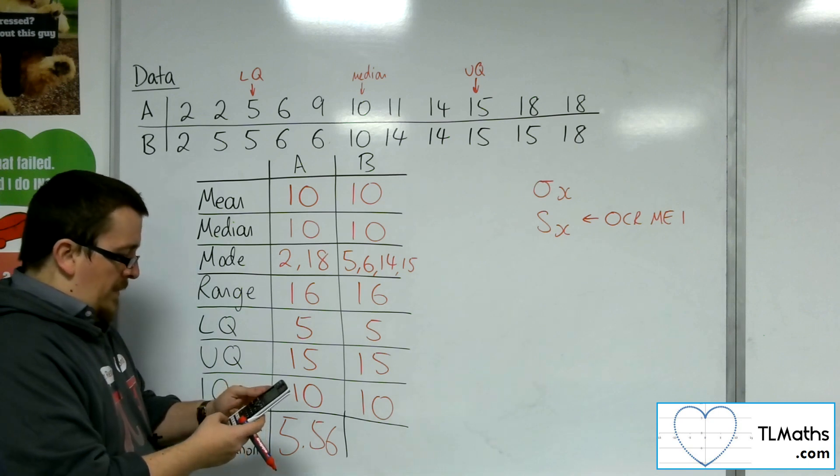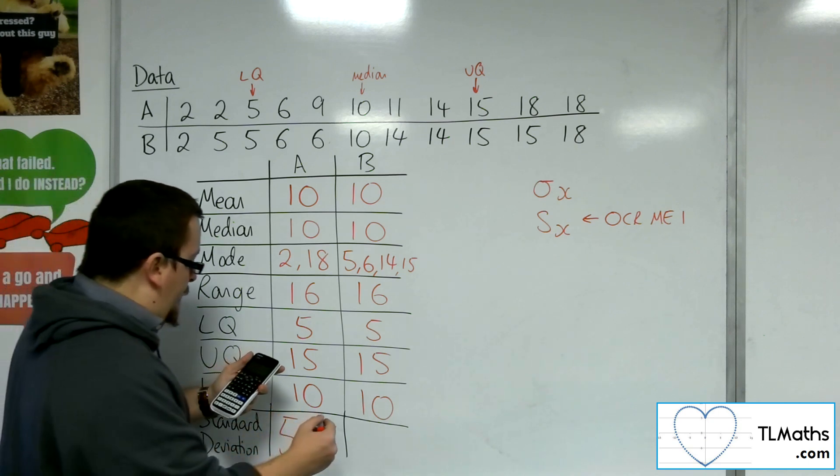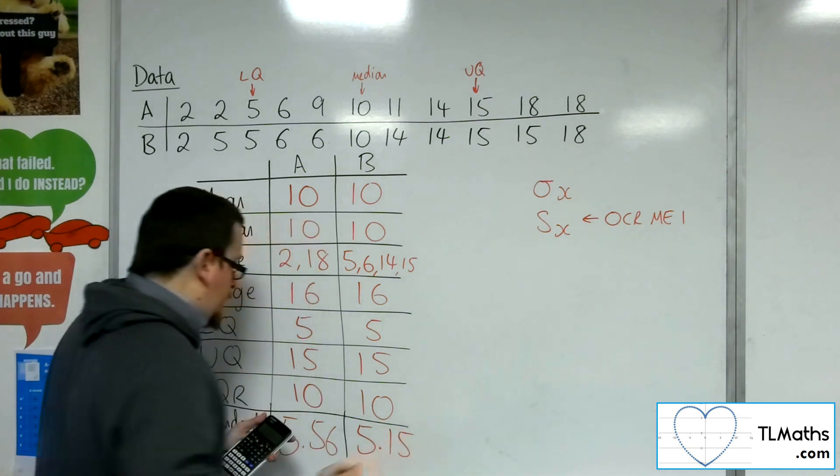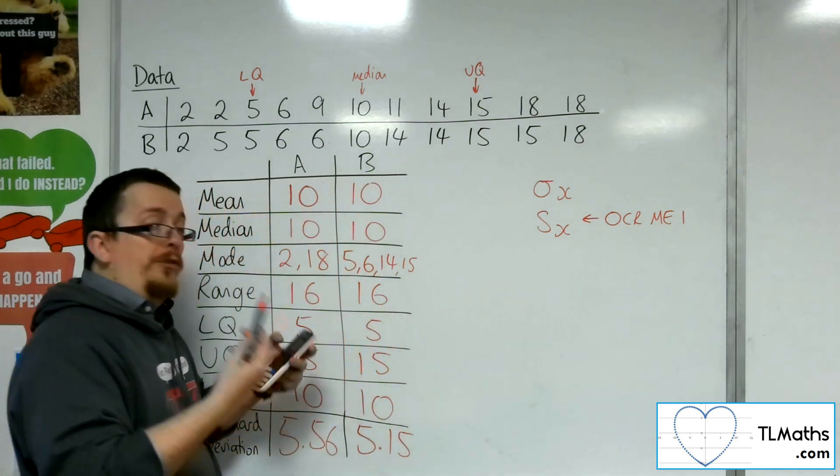Then we want to go to option, number 3, for one variable calculation, and then the sigma X is 5.15 to 3 sig fig. The SX, if you're doing MEI, is 5.40.